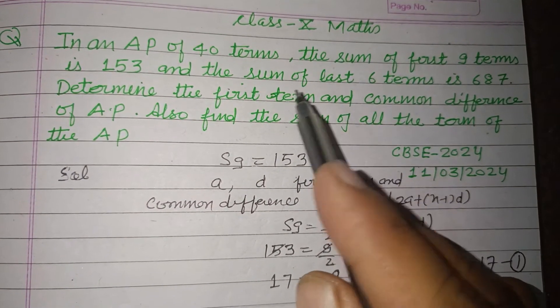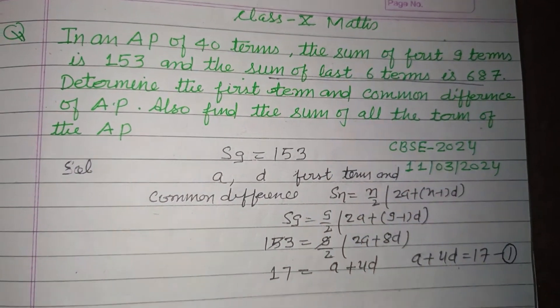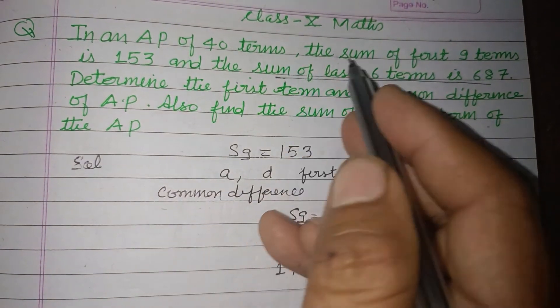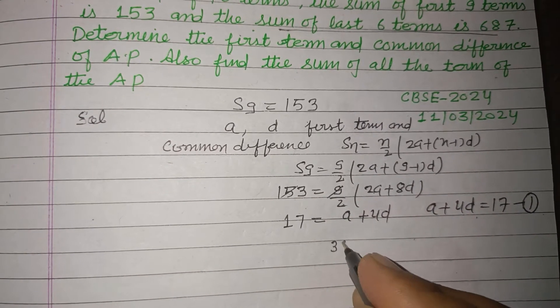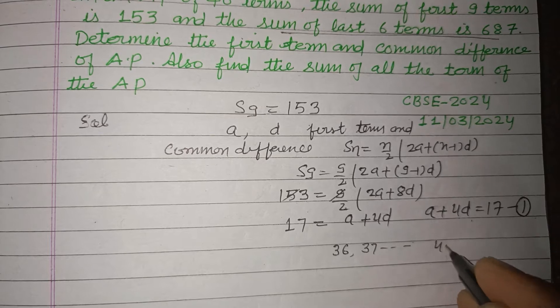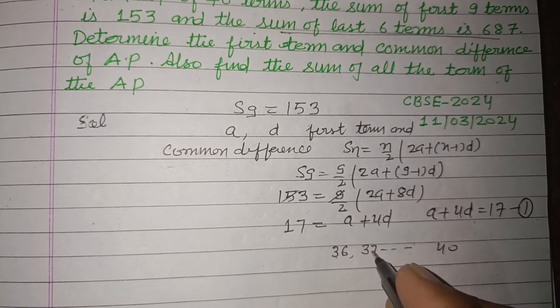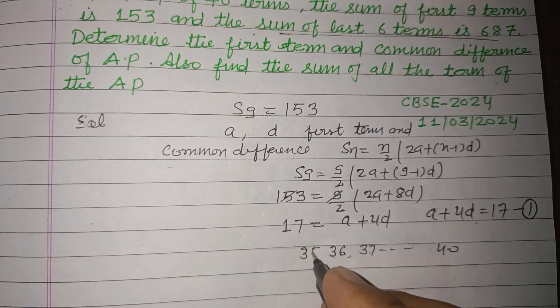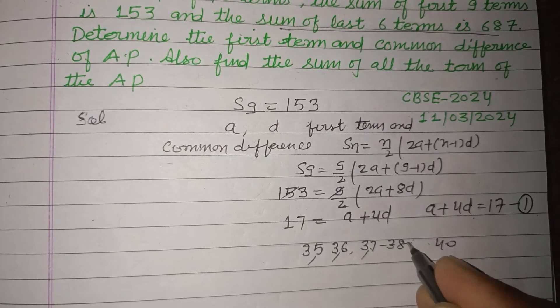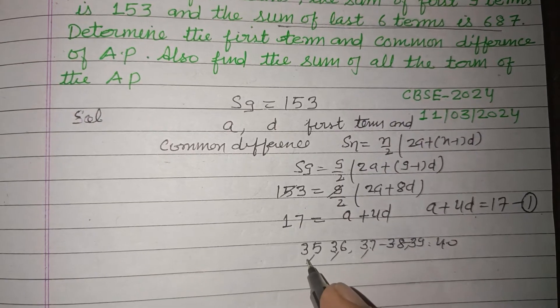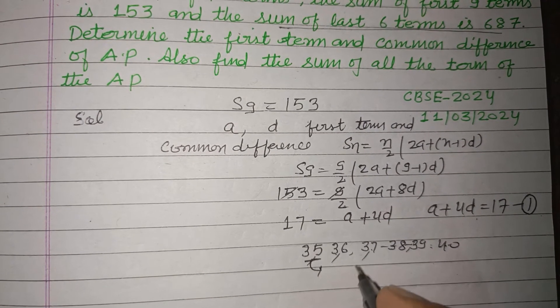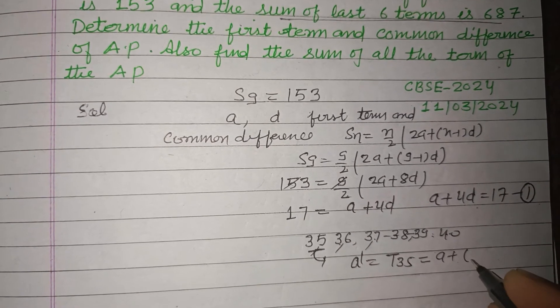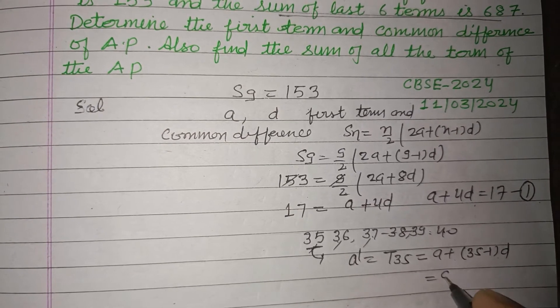Now, question is saying that sum of last 6 terms. It is noticeable, sum of last 6 terms. So last 6 terms, since Arithmetic progression has total terms of 40, so last 6 terms are started from 35, 36, 37, 38, 39, and 40. So 35th term is the first term for this summation. So here A dash equal to T35, which is A plus n minus 1, 35 minus 1 into D. So this is A plus 34D.